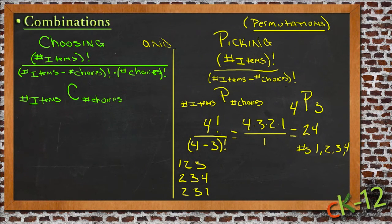Now, if we calculate the combinations possible, we'd write this as 4C3 instead of 4P3. Our calculation would be the same, except on the bottom we'd also include the number of choices factorial. So we'd have 4 factorial over 4 minus 3 factorial times 3 factorial.